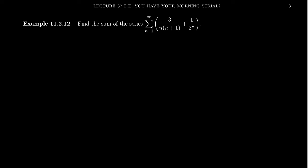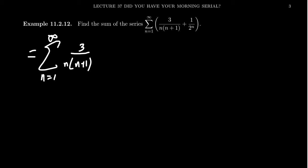An example of how we can use these properties to determine convergence and compute the sum of a series: consider the series from n equals 1 to infinity of 3 over n(n+1) plus 1 over 2^n. We can break this series up into pieces — take the sum of 3 over n(n+1) from n equals 1 to infinity, and separately the sum of 1 over 2^n from n equals 1 to infinity. We can also factor out that coefficient of 3 in front. We use linearity to break these things up.